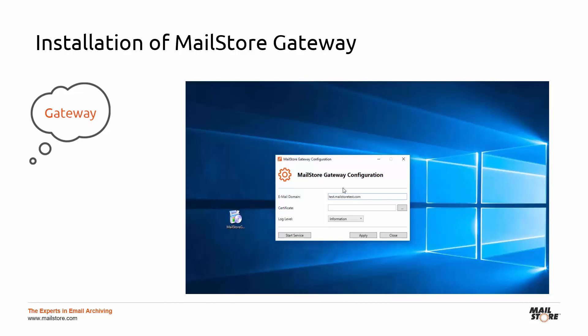Here is an example. If the primary domain is called mailstortest.com and you want MailStore Gateway to be able to receive emails, you will need to create a DNS entry such as test.mailstortest.com in the DNS zone mailstortest.com. The entry must point to the public IP address under which MailStore Gateway can be reached.